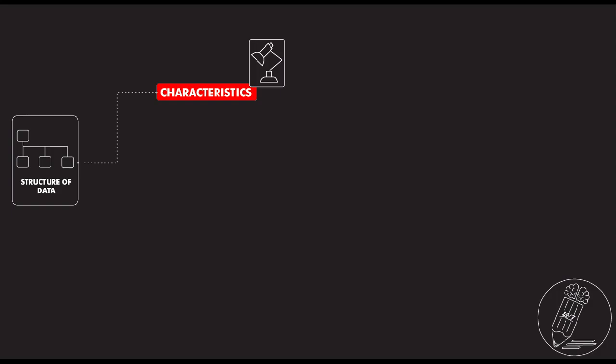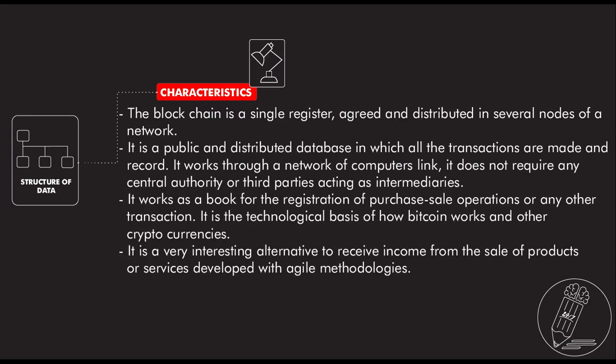Blockchain is a structure of data. The characteristics are that blockchain is a single register, a grid, and distributed in several nodes of a network. It is a public and distributed database in which all transactions are made and recorded.